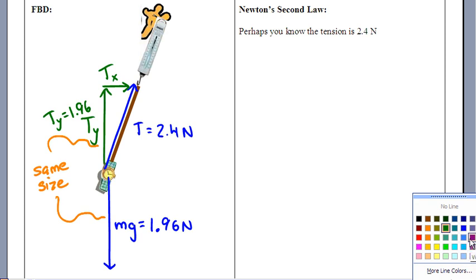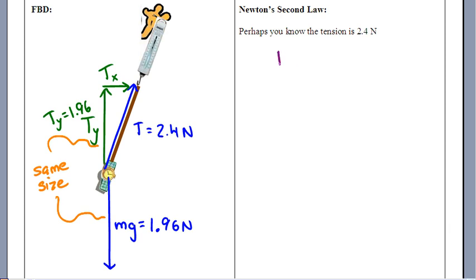Again, maybe we know that that tension on the diagonal is 2.4 Newtons. So we could say, all right, how about this? Broken with two-dimensional physics here, the tension at hypotenuse squared is going to have to be Tx squared plus Ty squared.